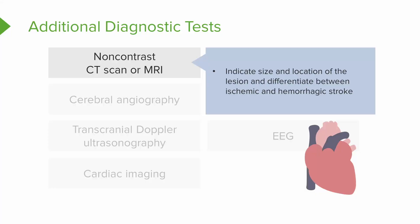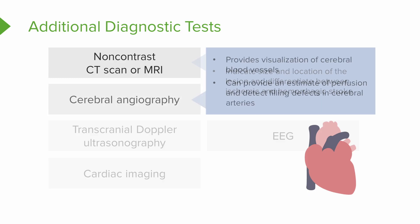Let's review quickly. A non-contrast CAT scan or MRI lets us look at the lesion and helps us differentiate between ischemic and hemorrhagic stroke. Cerebral angiography lets us know about the blood vessels in the brain, gives us an estimate of how well it's perfusing, and shows if there are any filling defects in the cerebral arteries.